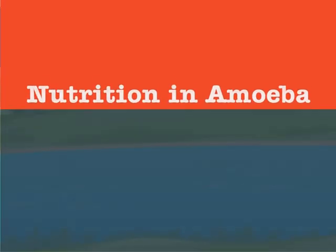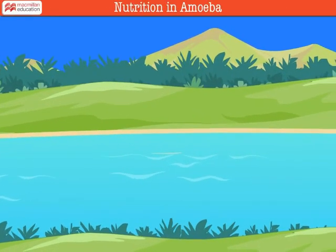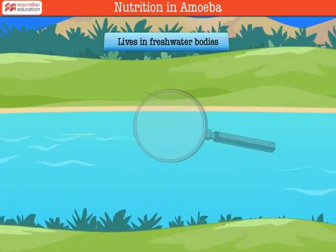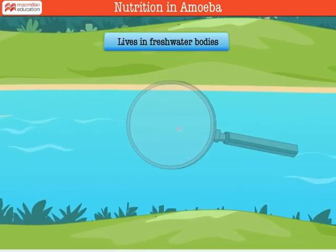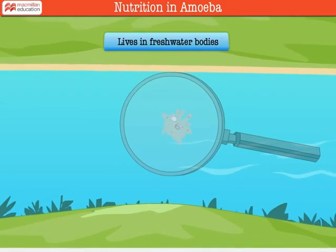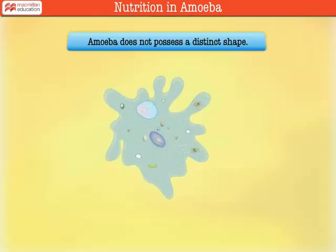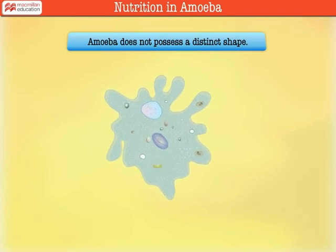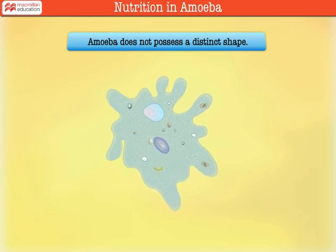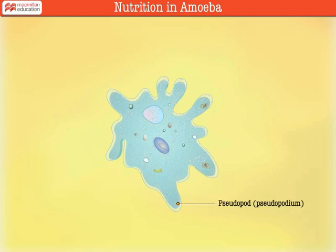Amoeba is a unicellular freshwater animal that is free living and is seen in ponds, lakes, or even puddles. Amoeba is a mass of protoplasm. It does not have a distinct shape. Its shape keeps changing because of the formation and withdrawal of pseudopodia, or false feet. Amoeba is unicellular.